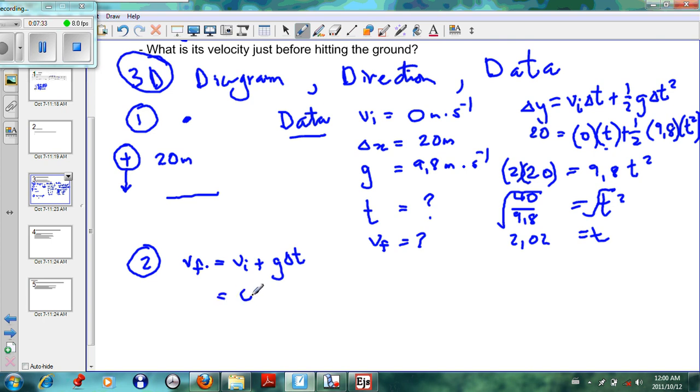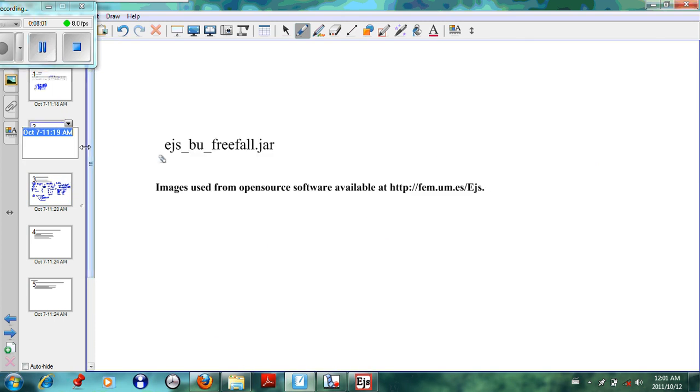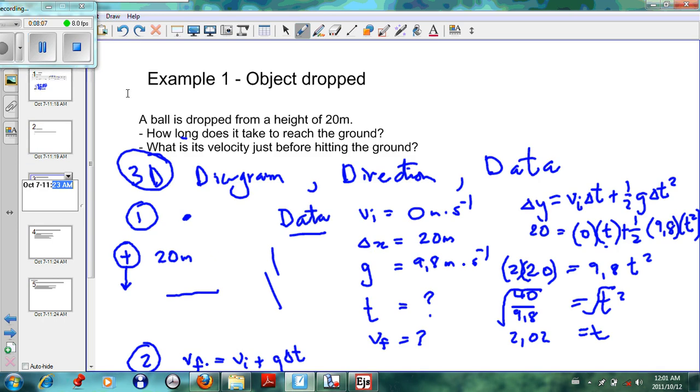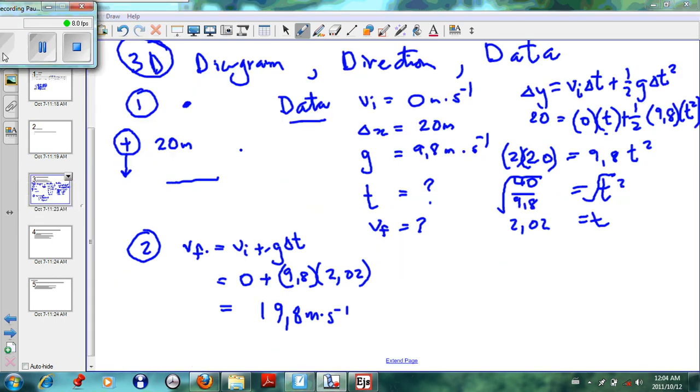Our initial velocity, because it is dropped, is zero, plus gravity is 9.8, and the time it takes to hit the ground is 2.02 seconds. If you multiply it out, we can get our answer, which is 9.8 multiply by 2.02. If you work that out, we see that we get an answer of 19.8 meters per second squared.